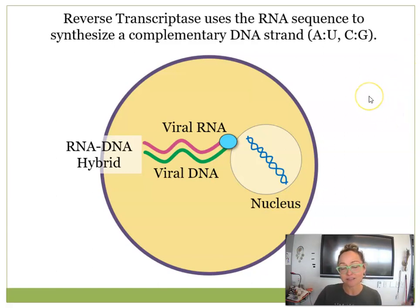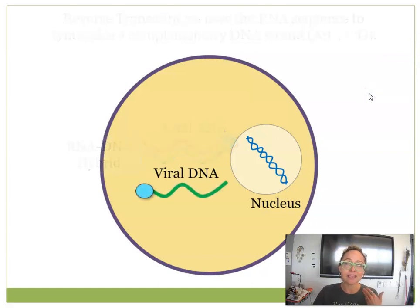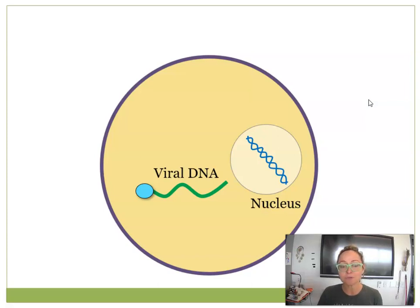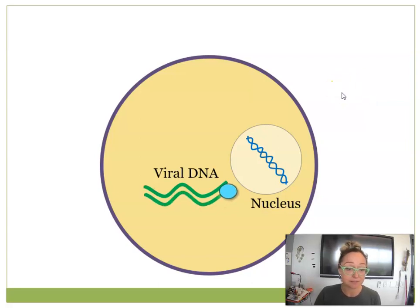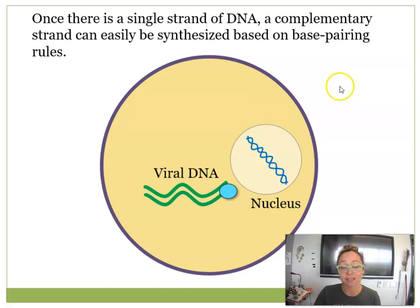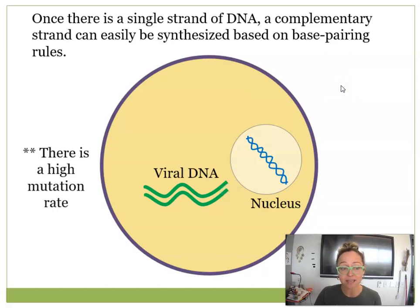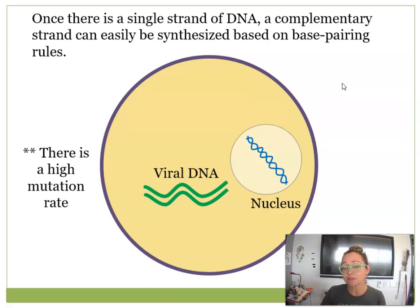This creates an RNA-DNA hybrid. Reverse transcriptase is a type of DNA polymerase, so it's also able to build a complementary strand of DNA, resulting in a double helix of viral DNA inside the cell. There is no proofreading or double-checking, which is one reason why there's a high mutation rate.